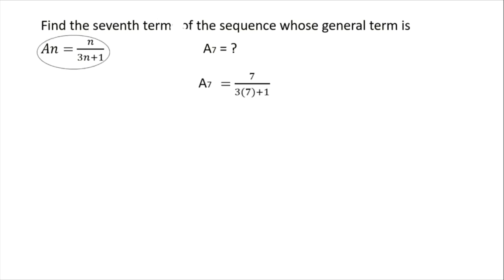So 7 all over 3 times 7 plus 1 is equal to 7 all over 21 plus 1 because 3 times 7 is 21. And to simplify that, we have 7 over 22 as our seventh term. So therefore, the seventh term of the sequence is 7 over 22.